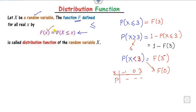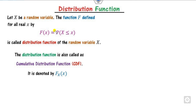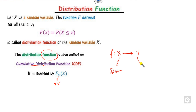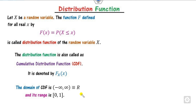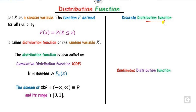Based on this definition, the distribution function is also called the cumulative distribution function (CDF), and here x is called the random variable. Since this is a function, every function has a domain and a range. The domain of this distribution function is the complete real line, and the range is the interval [0, 1]. Based on whether the random variable is discrete or continuous, we define two kinds of distribution functions: continuous and discrete.